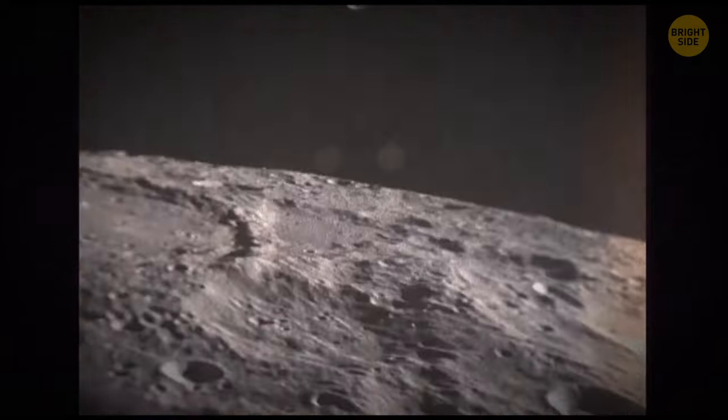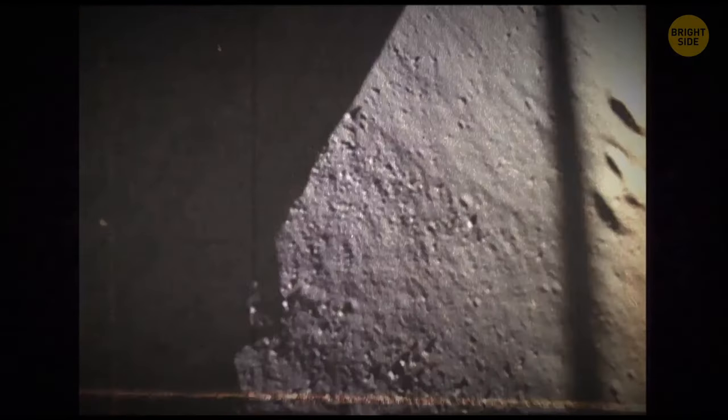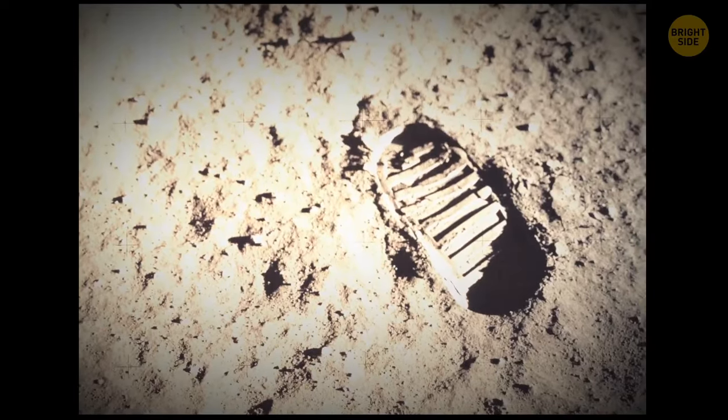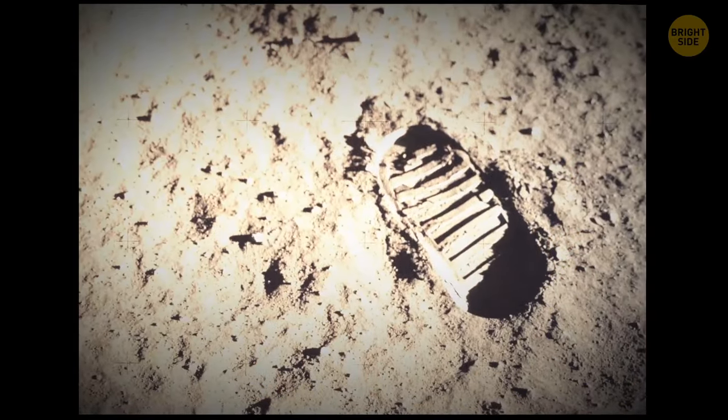Moon rocks have a super-slow erosion rate – about 0.04 inches for every one million years. That's why the Apollo astronauts' footprints left on the Moon are likely to stay there for 10 to 100 million years.